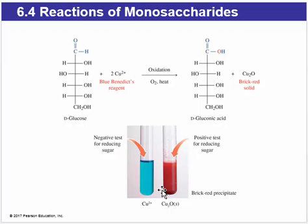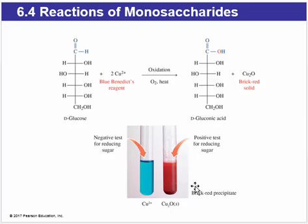A brick red precipitate or solid forms. So Benedict's reagent is a way to help identify an unknown sugar, because if the copper plus two gets reduced, then we know that it was in contact with a reducing sugar.